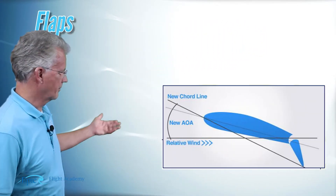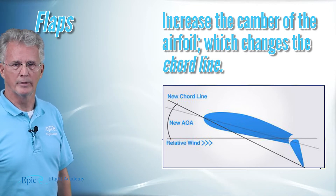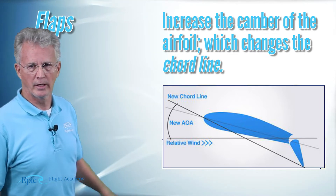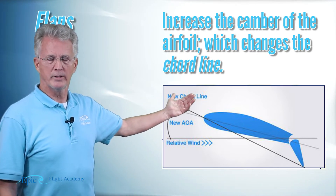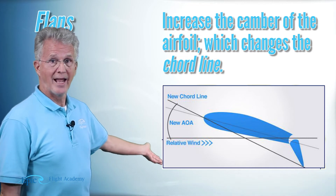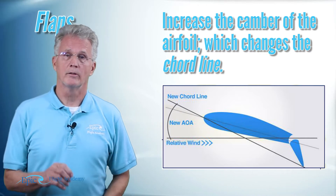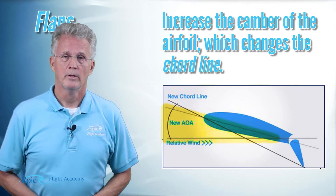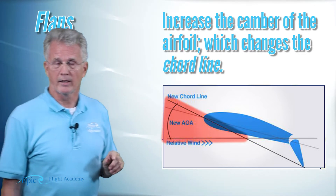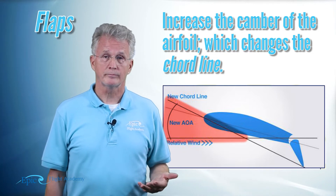If you take a look at this diagram, flaps increase the camber of the airfoil by changing the chord line. Remember when we talked about the angle of attack — the chord line was an imaginary line from the leading edge to the trailing edge. You can see how we've taken the trailing edge of this airfoil and dropped it down. That's a flap. So aerodynamically we've changed the chord line. The angle of attack was the angle between the chord line and the relative wind, so for the same relative wind with the new chord line we now have a larger angle of attack.